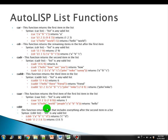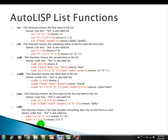The next one is CDDR. This function returns a list that includes everything after the second item in a list. So we have here a list of character strings. It returns everything after the second item — first, second — so it returns C and D, which are the third and fourth. Another example is a list of numbers. It returns all the items in the list after the second item, giving us 3, 8, 7.